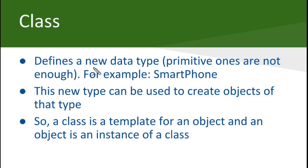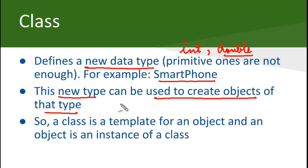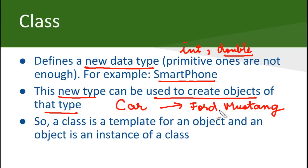So let us now define a class. What a class does is it defines a new data type. As we had seen integers, double, etc., these are data types, but when we model a real world example into a program these are not enough. We need to create our own data types depending on the categories — there may be different kinds of bicycles, different kinds of phones. A class creates a new data type and this new data type can be used to create objects. So for example if we have a class car, we can have a Ford Mustang as an object. A class is basically a template of an object and these objects are instances of the class.